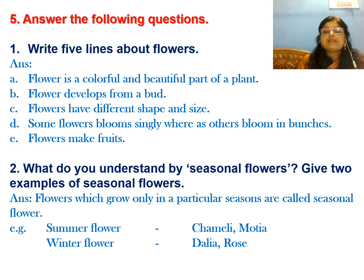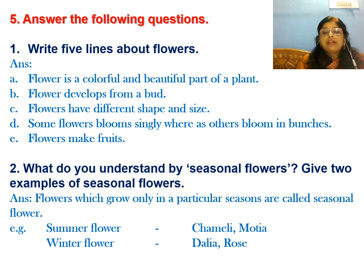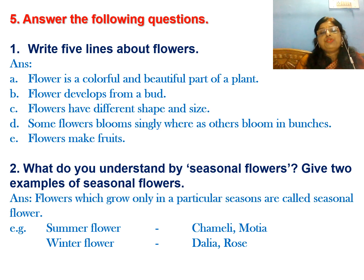Next question: what do you understand by a seasonal flower? Flowers which grow only in a particular season are called seasonal flowers. For example, if a flower grows in summer season, it is a summer season flower; if it grows in winter season, it is a winter season flower. Summer flowers: chameli and motia. Winter flowers: dahlia and rose.